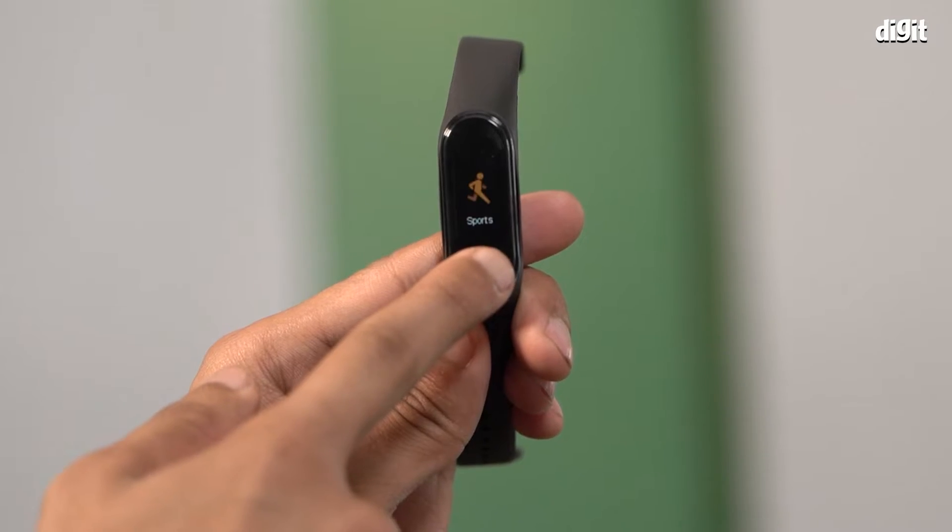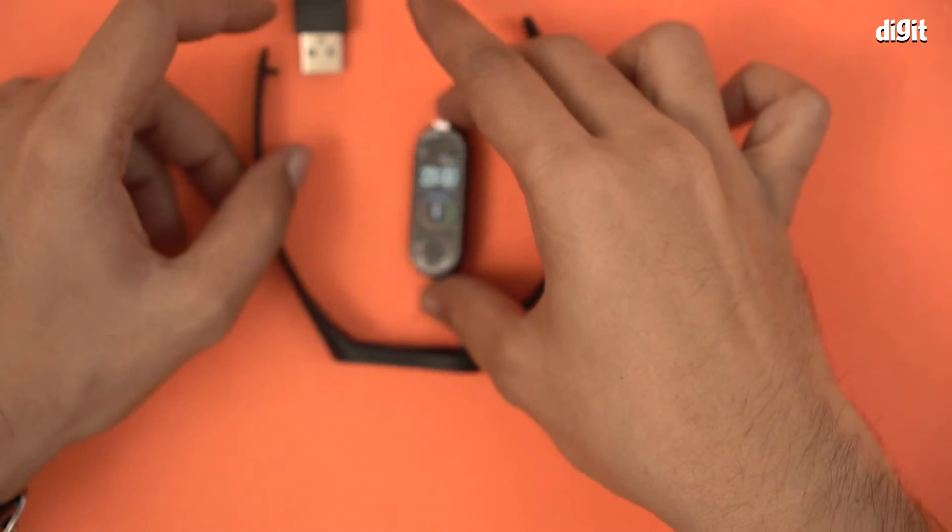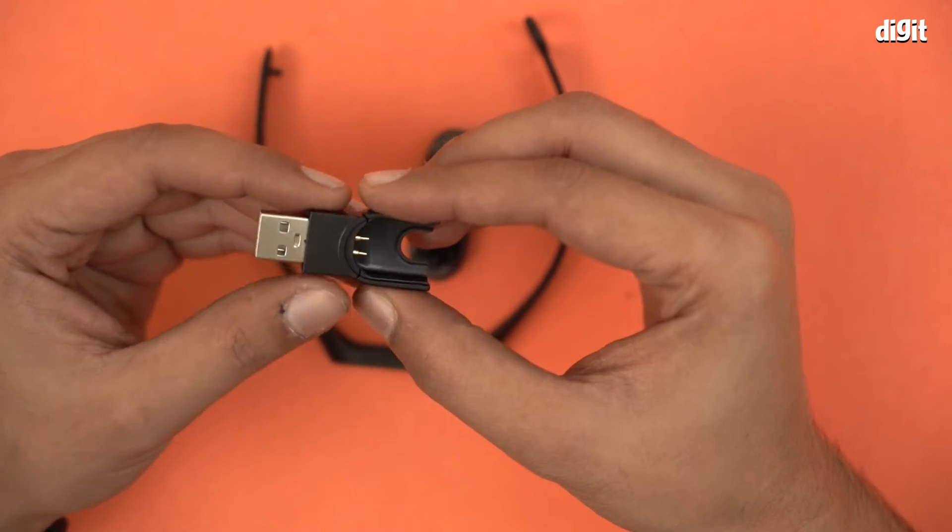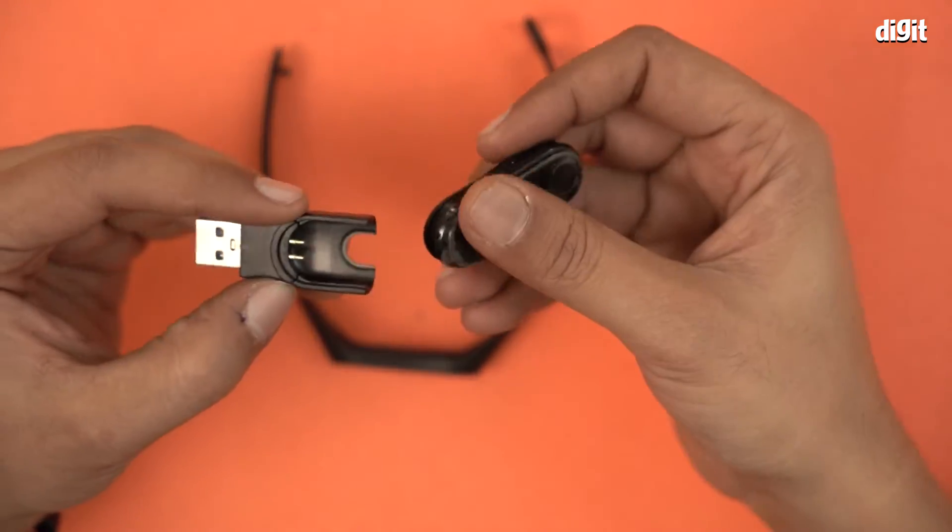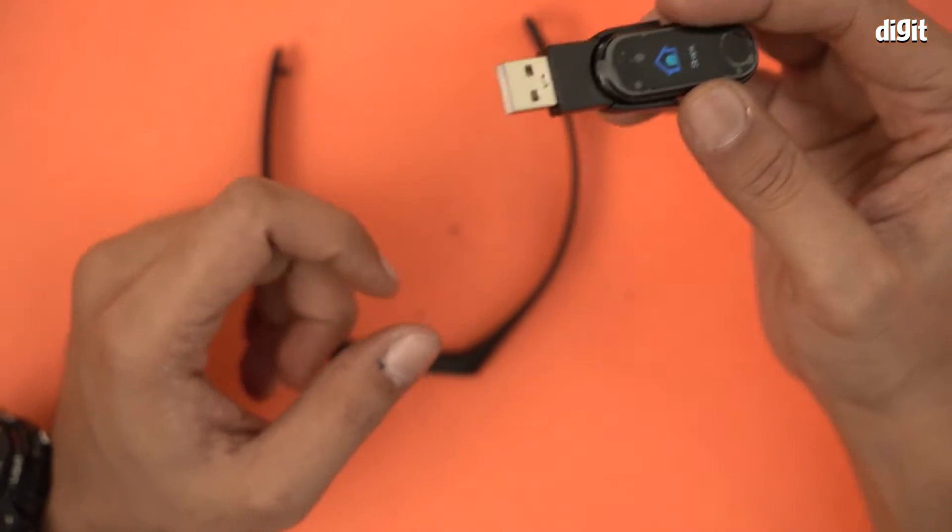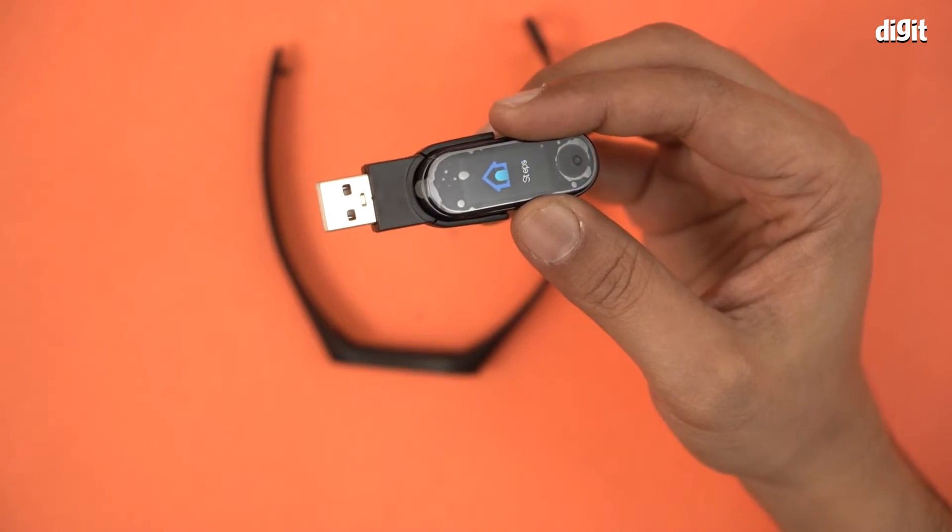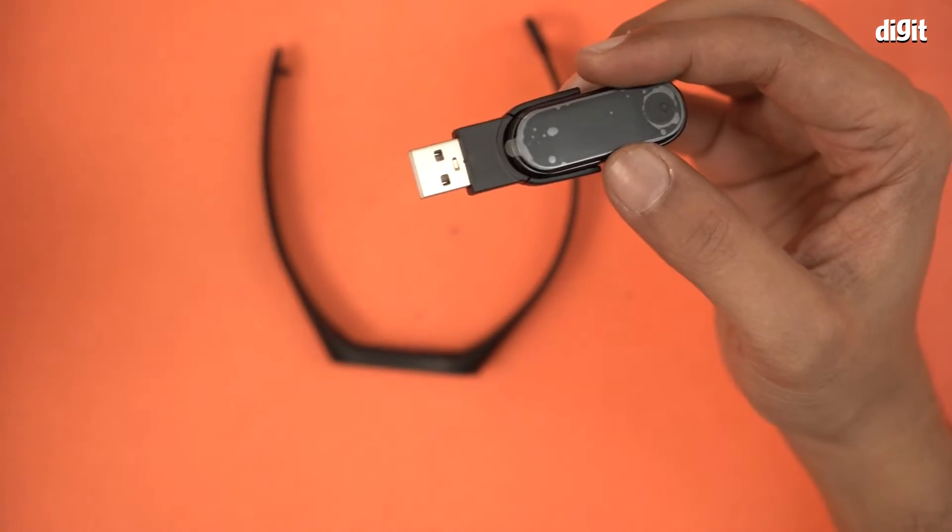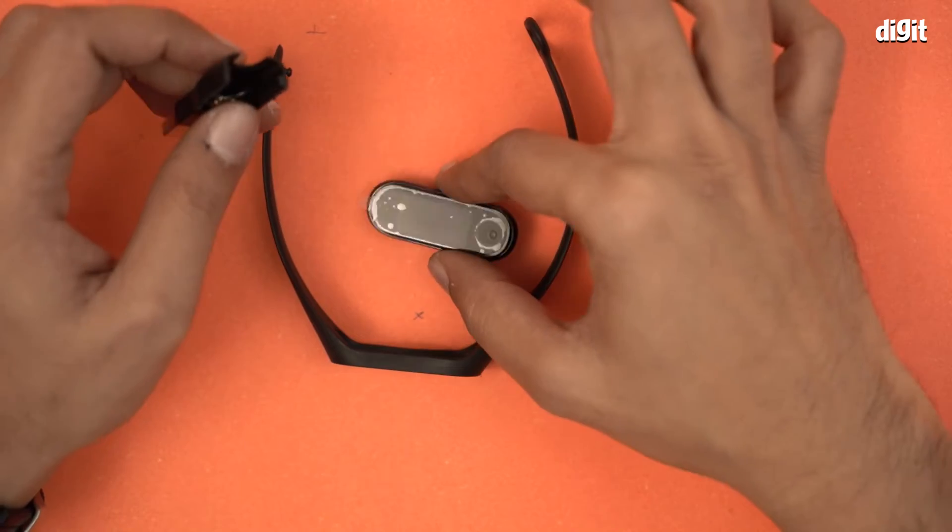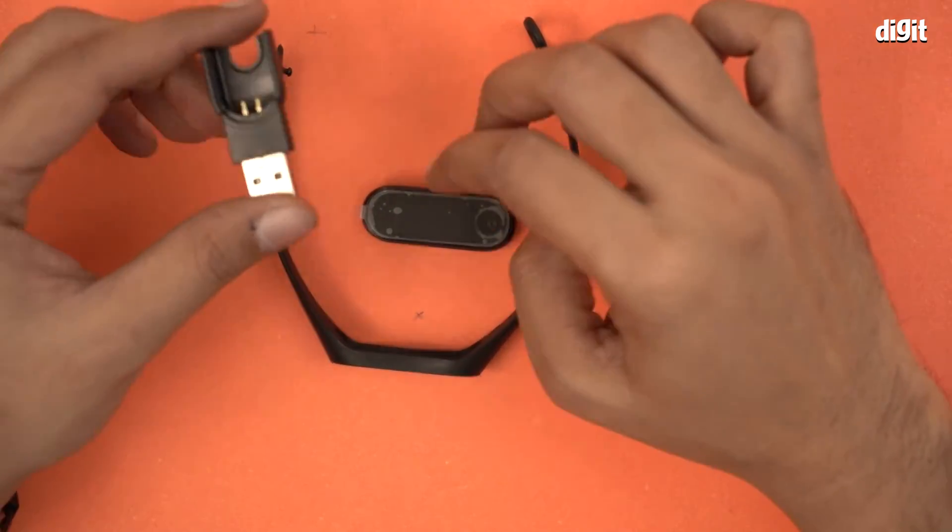It's very simple. Finally, we have this charging dock with a USB-A connector. The idea here is you just plug it in like this, and then this part goes into a USB charging slot. Or if you have an adapter, you can connect it to a power output and get this device charged.